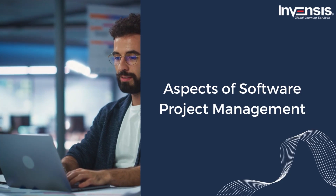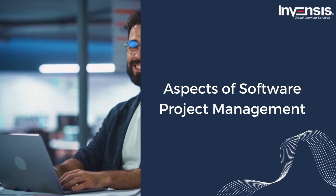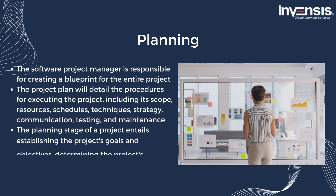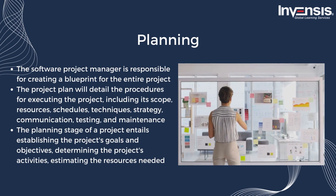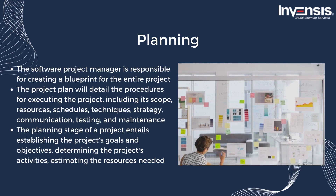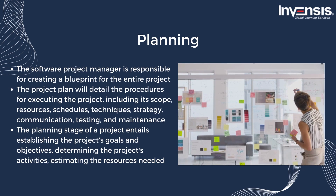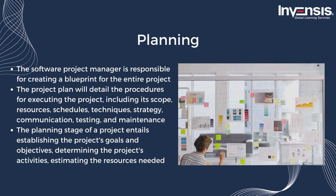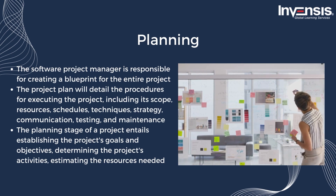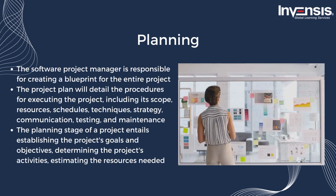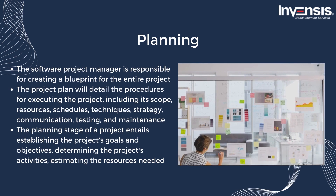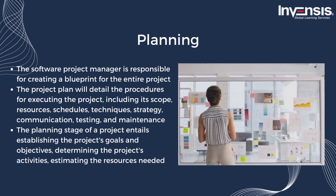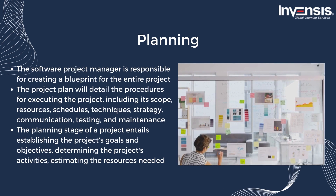Aspects of software project management. The first focus area is planning. The software project manager is responsible for creating a blueprint for the entire project. The project plan will detail the procedures for executing the project, including its scope, resources, schedules, techniques, strategy, communication, testing, and maintenance. SPM is of significant assistance here. The planning stage entails establishing the project's goals and objectives, determining the project's activities, estimating the resources needed, developing a project timeline, and determining project milestones.